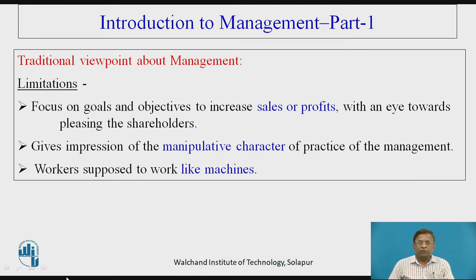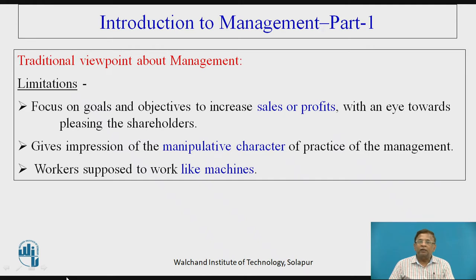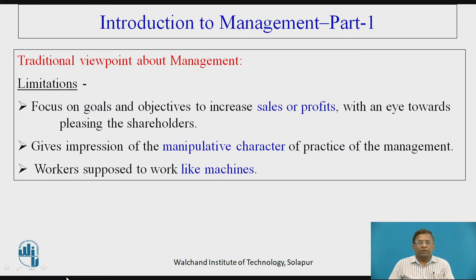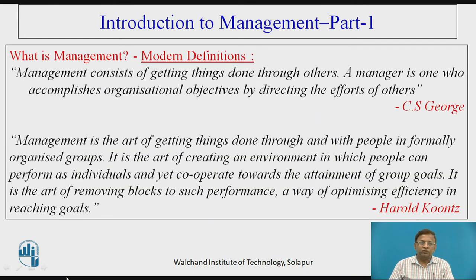If you see in the past, that is before the evolution of scientific management, how the management was seen — the management had main focus on profit making: how to increase their goods or manufactured items, how to sell to maximum exchange, and ultimately how to have maximum profit irrespective of workers or employees. Workers were treated almost like machines, giving the gross impression that management might be manipulative, ultimately to please the shareholders and make money only. That stood as the major limitation. Over the period, many people brought lots of developments in the management field.